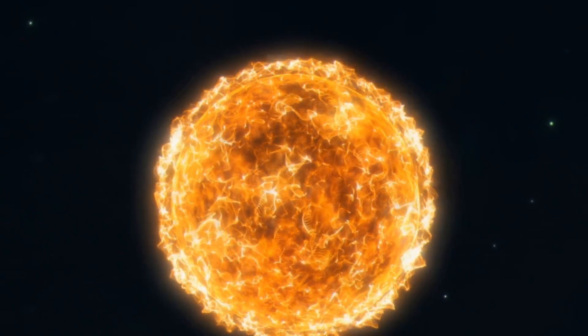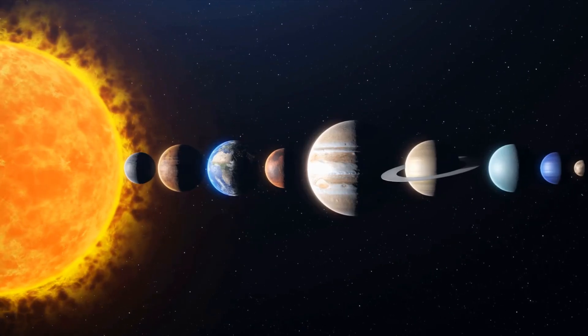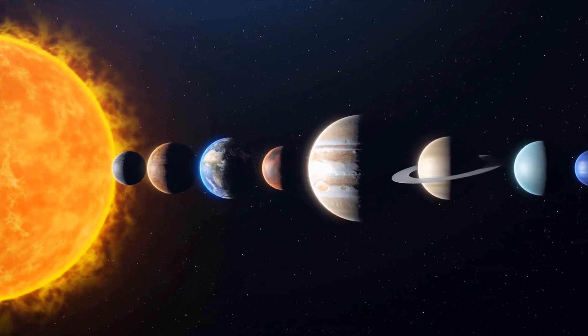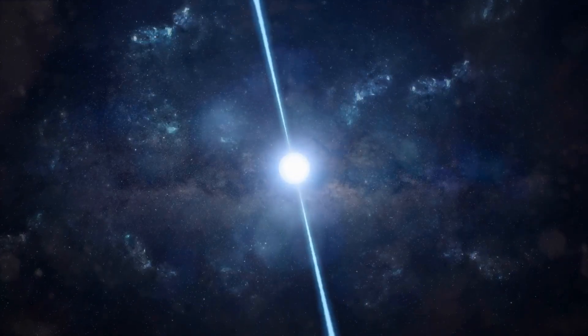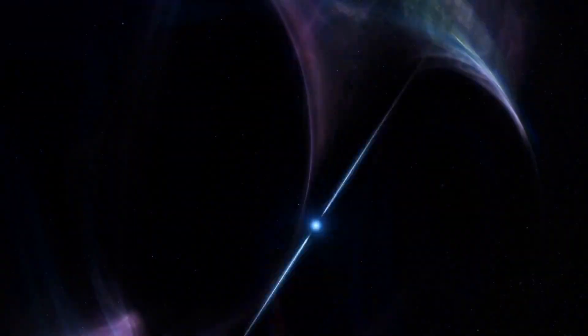Betelgeuse, a sprawling red supergiant, could engulf the orbit of Mars if placed at the center of our solar system. A neutron star? Just a tiny dot in comparison, but packing unimaginable power.